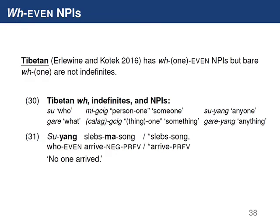Let's highlight the use of this in Tibetan. Tibetan has a WH-even NPI series and a WH-one-even NPI series, but bare WH words are not indefinite. 'Who' is su, and the NPI 'anyone' is suyang or suye, while the indefinite 'someone' is michik, meaning one person. So suyang is the NPI — we can say 'suyang lep ma song' for 'no one arrived,' but you can't say 'suyang lep song.'